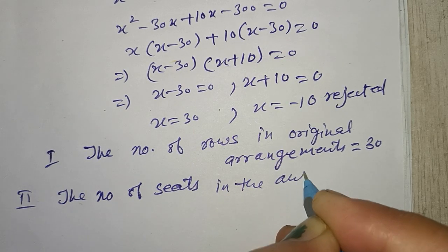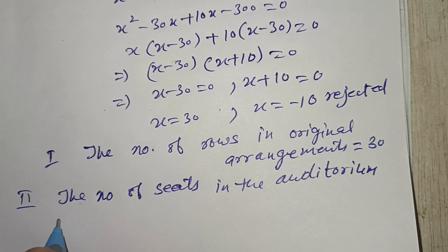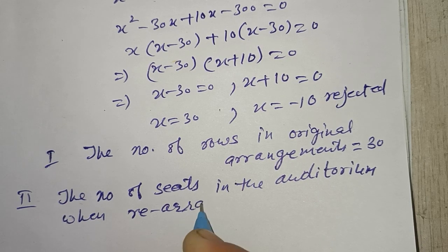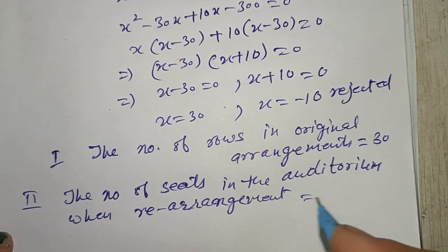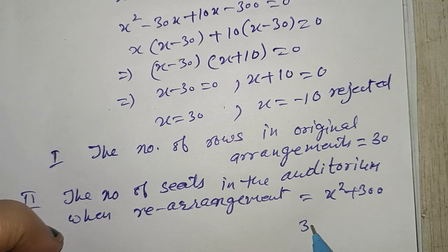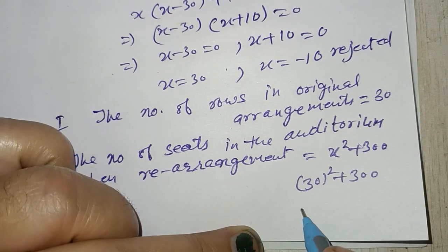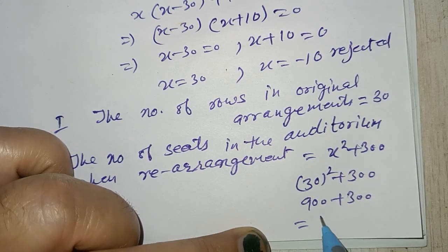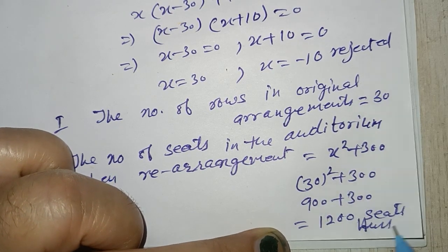The number of seats in the auditorium when rearrangement: x² plus 300. Put x value: 30² plus 300 = 900 plus 300 = 1200 seats. Answer.